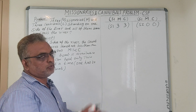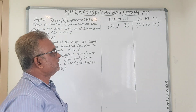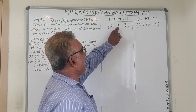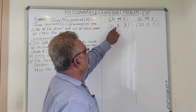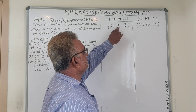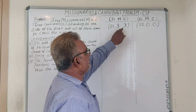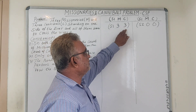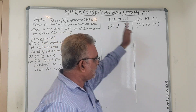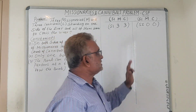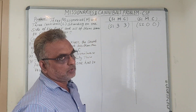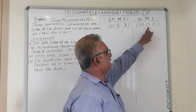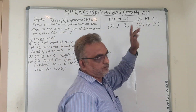From the initial state, we have to reach the goal state where three missionaries and three cannibals come to side 2. So the goal state should be S2 = (3, 3).